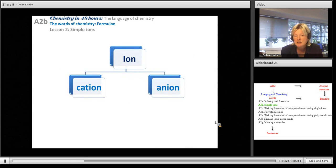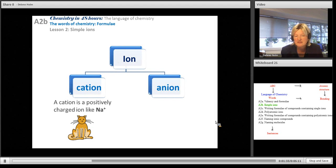So ions can be positively charged or negatively charged. We call a positively charged ion a cation. A way to remember it is with a diagram with little pluses for eyes and nose.